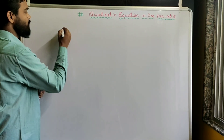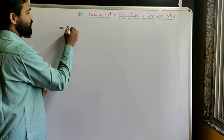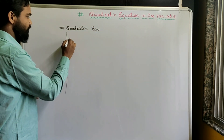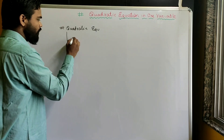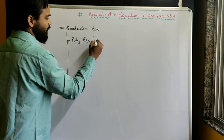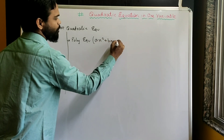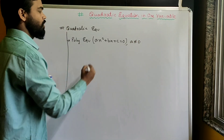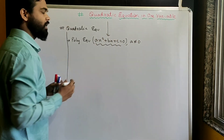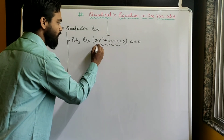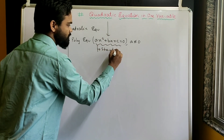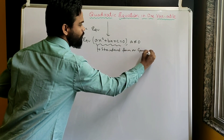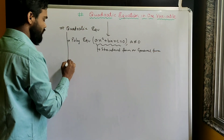Hi class, today we'll discuss quadratic equations in one variable. A quadratic equation is a polynomial equation in the form ax² + bx + c = 0, where a is not equal to zero. This is the standard form, also called the general form, for expressing a quadratic equation.